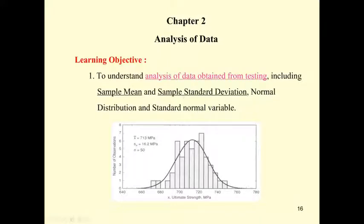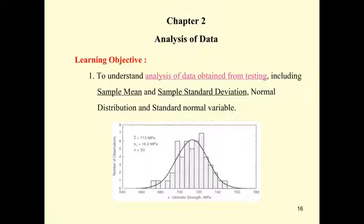For the standard deviation, it tells you how the data is distributed. If the data is distributed a lot, the sample standard deviation is going to be large. And if the standard deviation is small, that means all five data values are going to be close together. A good material is supposed to have properties close to each other, so we like to get a smaller standard deviation.